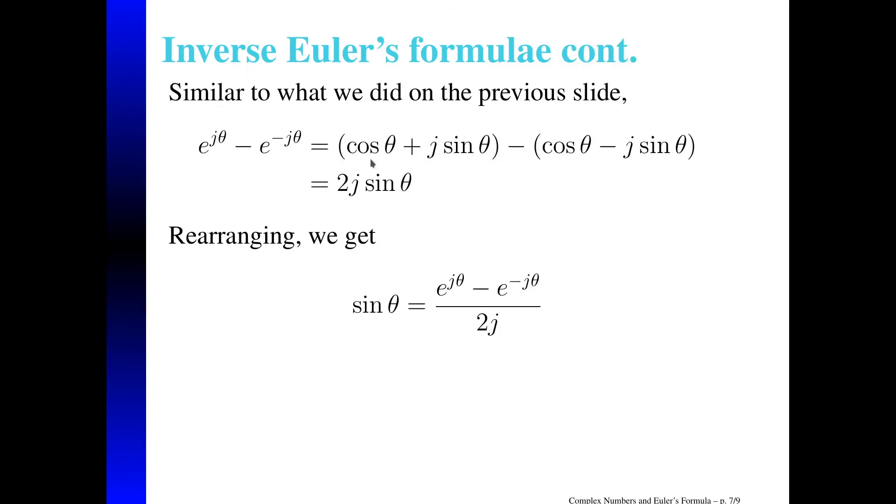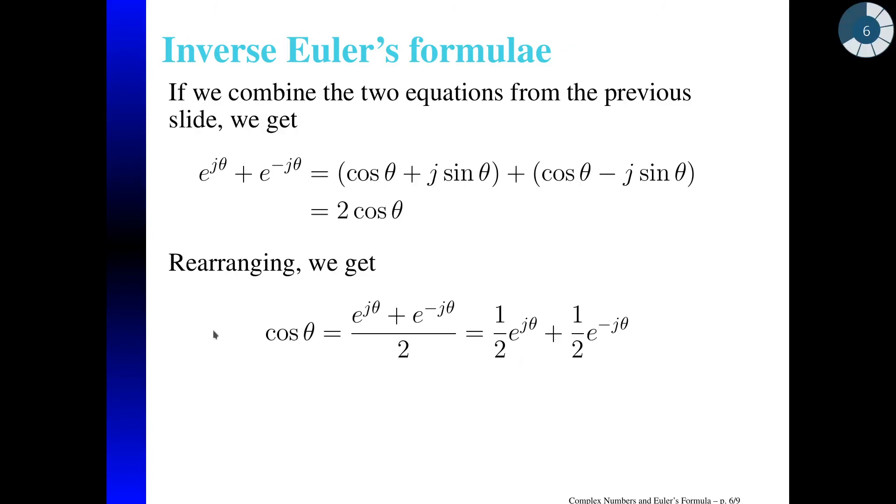What if we take the difference between the two? Well, now we get that cosine of theta minus cosine of theta cancels those two out, so I just get zero. And then J sine of theta minus, minus J sine of theta is 2 J sine of theta. And once again, rearranging, we see that sine of theta is equal to this complex number. This still is a complex number. We won't see this as much. Cosine is more useful because we'll be dealing with real signals for the most part.